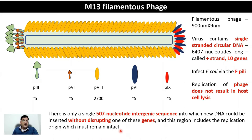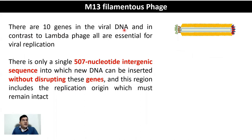M13 offers some advantages over Lambda phage in that you could generate single-stranded DNA here. In contrast to Lambda phage, all 10 genes are essential for viral replication. There is only a single 507 nucleotide intergenic space where the gene of interest can be inserted without disrupting the indispensable genes of M13, and this region includes the replication origin, which must also remain intact.